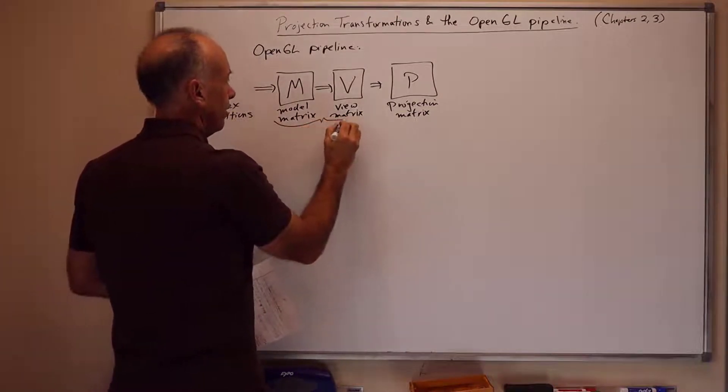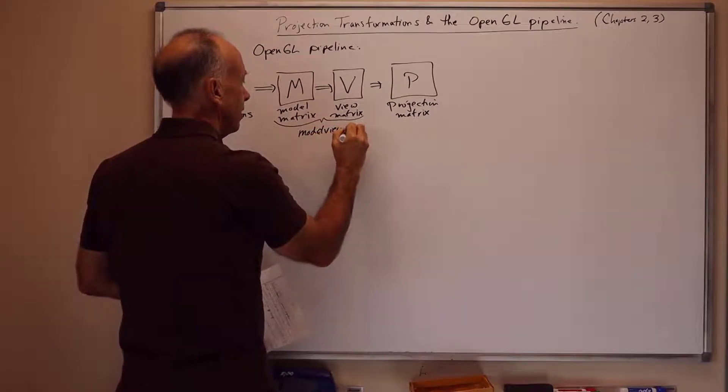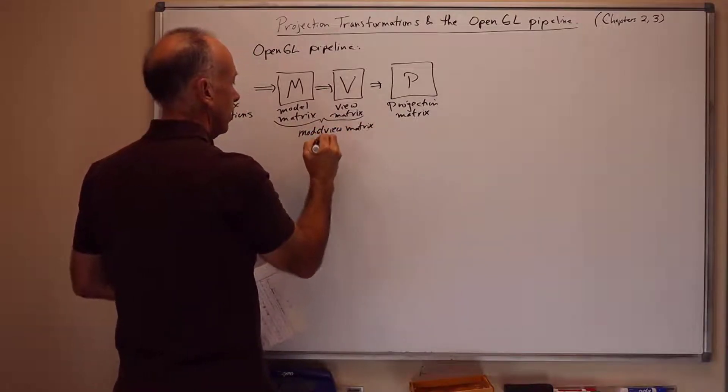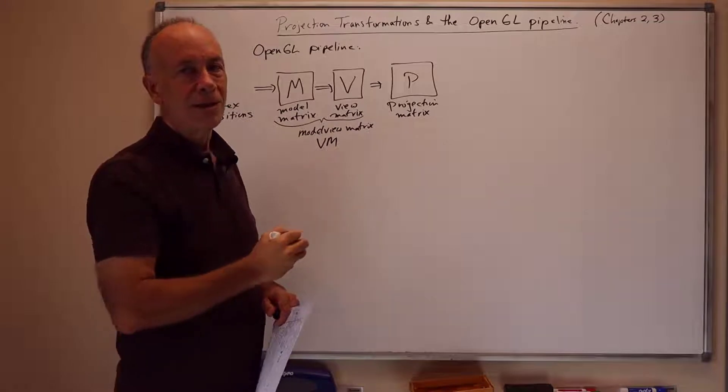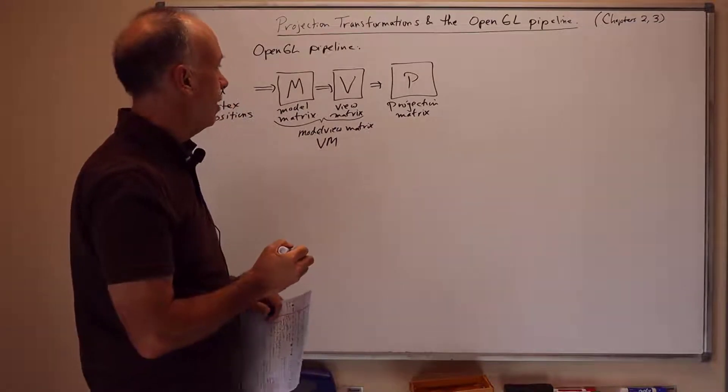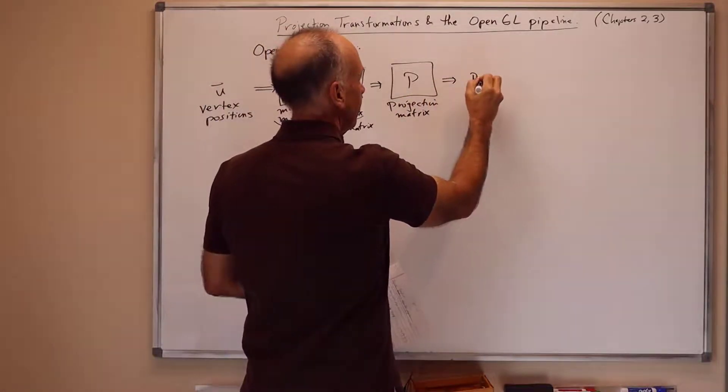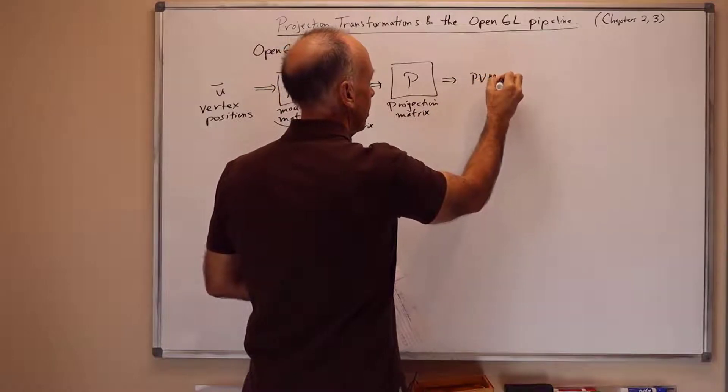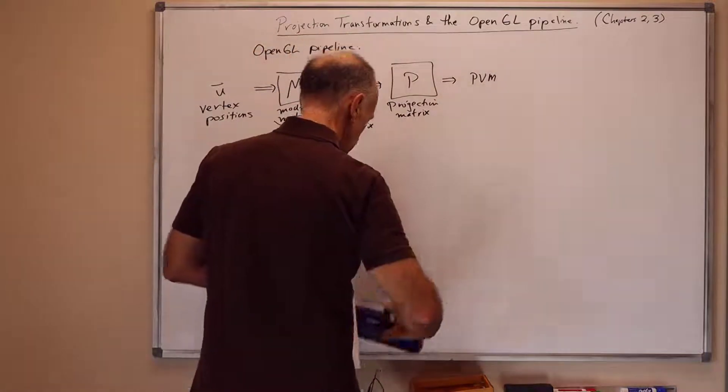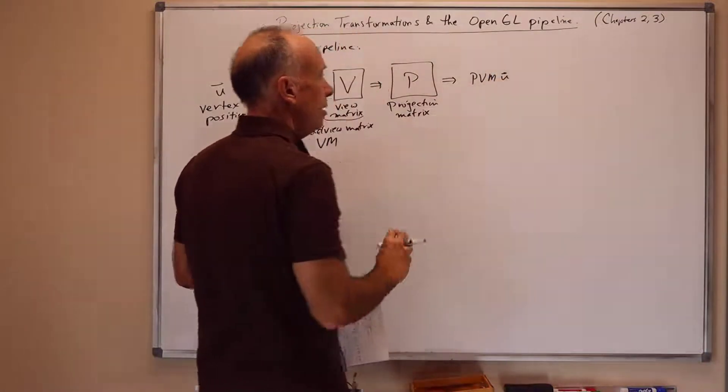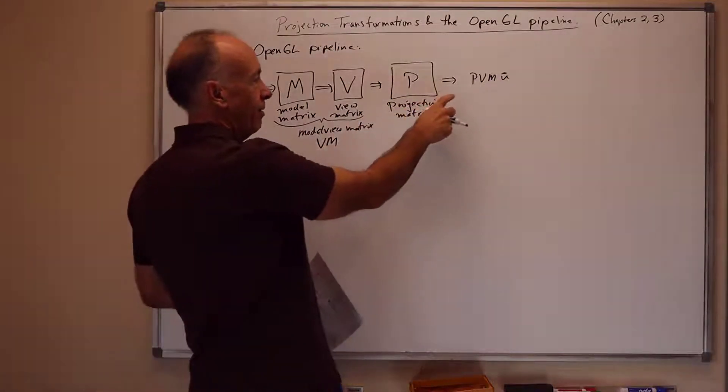The model and view matrices are frequently combined into a single model view matrix, which would be V times M. It's also often called just M, though, so we use M both for the model matrix and for the model view matrix depending on the setting. And what we do with these in the pipeline is this outputs the value of P times V times M times the original position U. The code may or may not maintain separate matrices, but the pipeline in the end outputs this value.